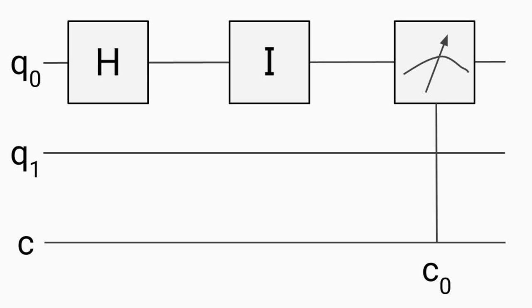Finally, we measure qubit 0, which means we have a 50% chance of collapsing into state 0 and a 50% chance of collapsing into state 1, meaning that the state qubit 0 collapses into is random with a 50% chance of landing in state 0 and state 1. This information is finally stored on classical bit 0.